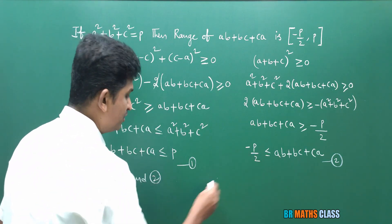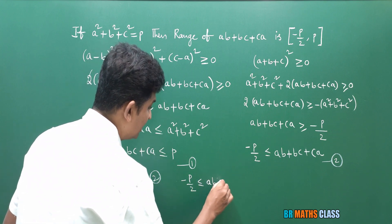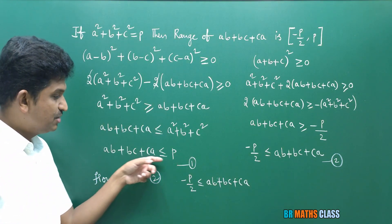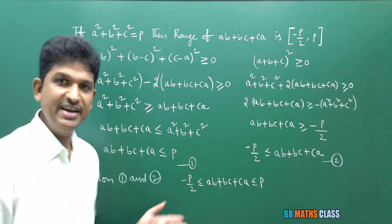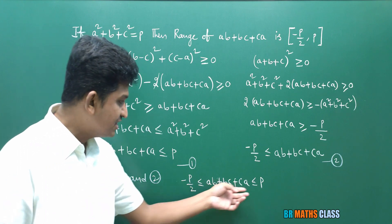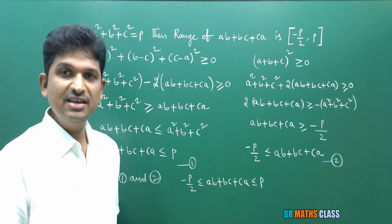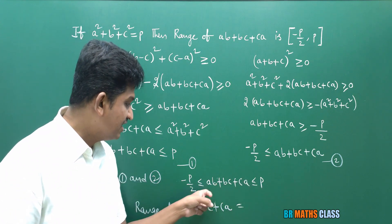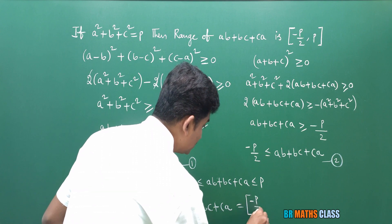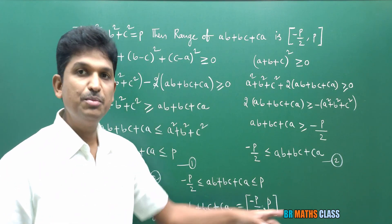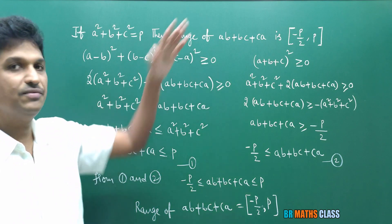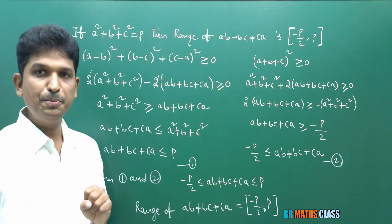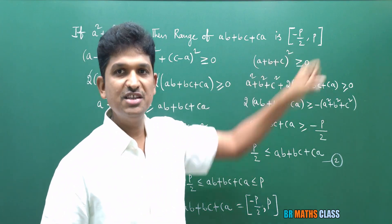From these two conditions, since equality holds in both, we can write: the range of AB + BC + CA is the closed interval [−P/2, P]. This completes the derivation of the formula. From now onwards, we use this statement as a shortcut formula: if A² + B² + C² = P, then the range of AB + BC + CA is the closed interval [−P/2, P].